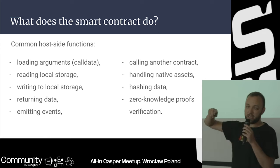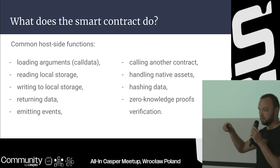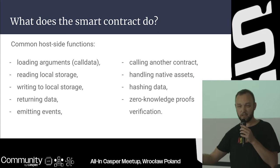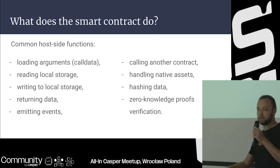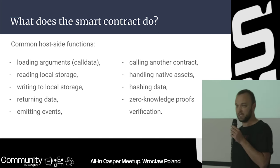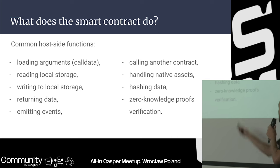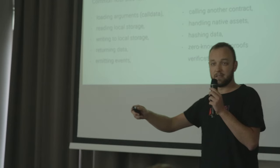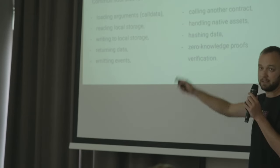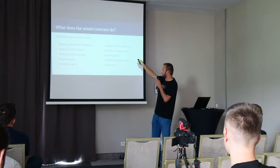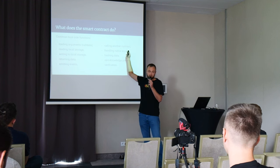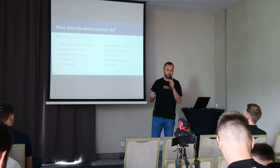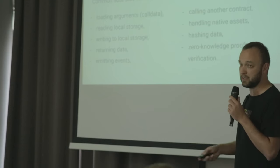Emitting events: during execution, the program itself reports what it does and what it did, so it can later be reused for presentation in the browser, for example. Calling another contract: your contract needs to interact with another contract that has its own state and logic. And native assets: different blockchains have different ideas about how to send and receive tokens.